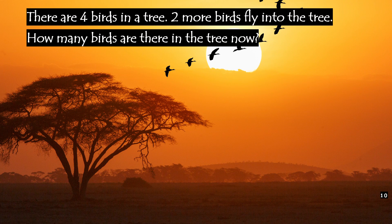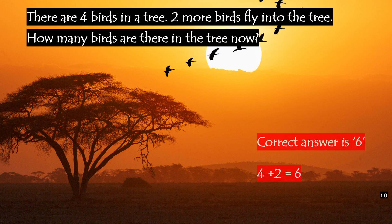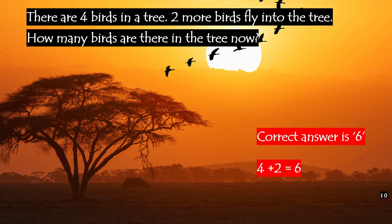There are 4 birds in a tree. 2 more birds fly into the tree. How many birds are there in the tree now? The correct answer is 6. 4 plus 2 is 6.